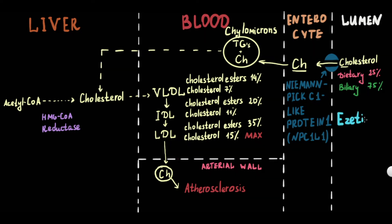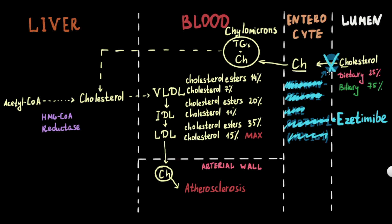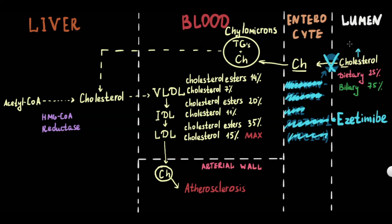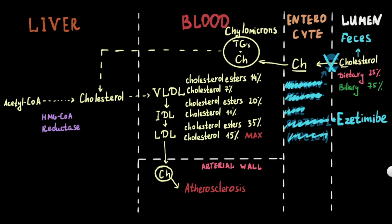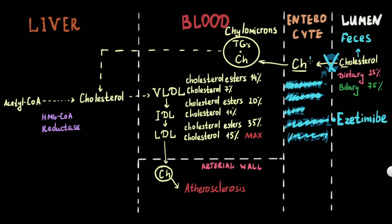Ezetimibe inhibits intestinal cholesterol absorption by selectively blocking NPC1L1 in the brush border. As a result, cholesterol is excreted with the feces. By inhibiting cholesterol absorption, ezetimibe reduces the amount of cholesterol delivered to the liver by chylomicrons.